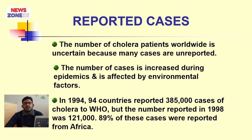The number of cholera patients worldwide is uncertain because many cases are unreported. The number of cases increases during epidemics and is affected by environmental factors. In 1994, 94 countries reported 385,000 cases of cholera to WHO, but the number reported in 1998 was 121,000. In 1998, 89 percent of these cases were reported from Africa.